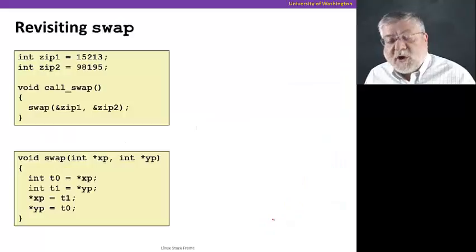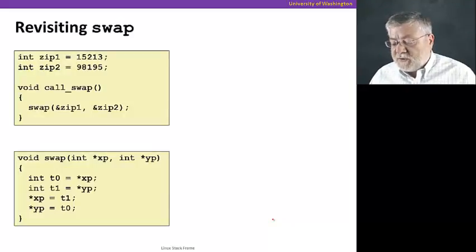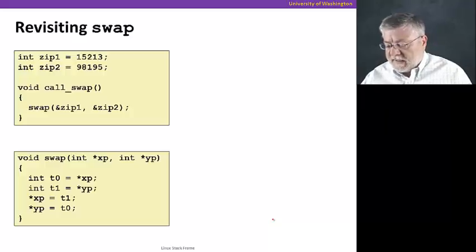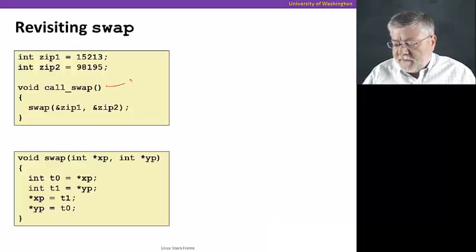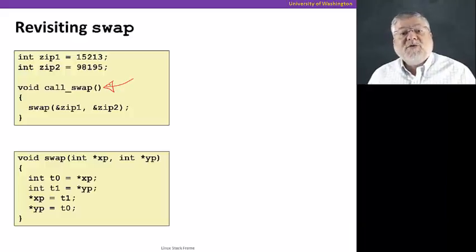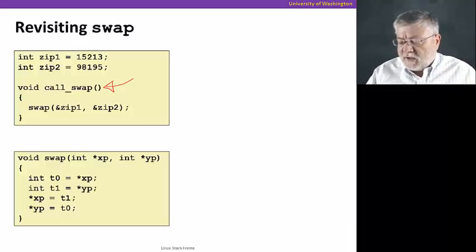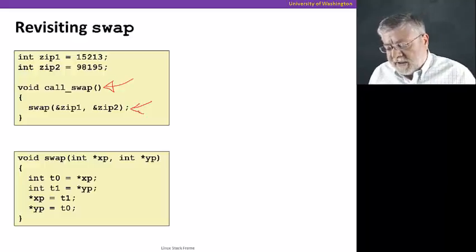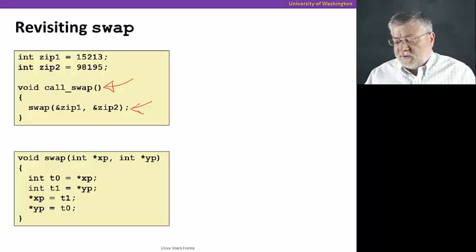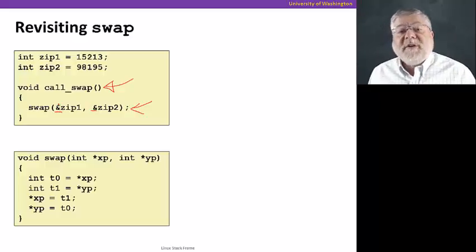Here we're going to go back to that swap function, swap procedure that we had. Do it a little bit differently this time. Here we have a function called call_swap, which doesn't do very much. All it does is it calls another procedure called swap with two arguments, two addresses,